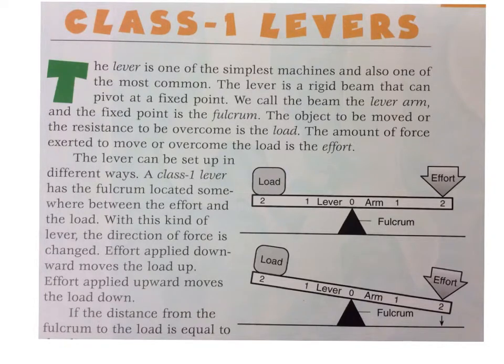Class 1 Levers. The lever is one of the simplest machines and also one of the most common. The lever is a rigid beam that can pivot at a fixed point. We call the beam the lever arm and the fixed point is the fulcrum.